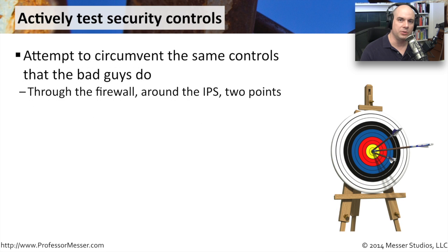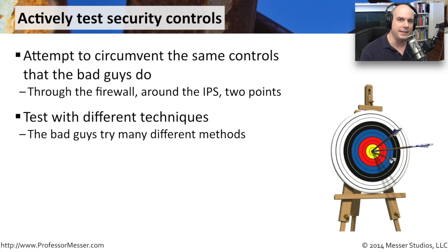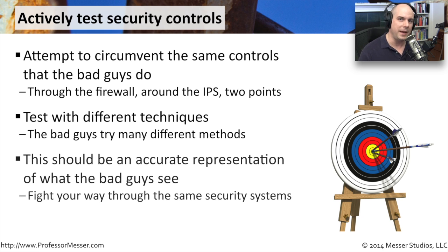When you're testing your security controls, try to use the same methods that the bad guys use. Try to get in through your firewall, get around your IPS system, maybe try to do some scanning. How slow do you have to scan to get through your IPS? That's one of the best ways to get an idea of what the bad guys would have to do to get into your systems. Try many different techniques — maybe it's not just one scanner, but other scanners and security frameworks that allow you to try different methods. This gives you a good idea of what the bad guys are seeing so you can set up your security systems to prevent them from getting in.